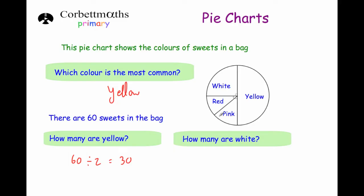The next question says how many sweets are white? Well white is a quarter of the pie chart, so that means that a quarter of the sweets are white. So we just need to do 60 divided by 4. If we halve 60 to get 30 and halve it again we'll get the answer which is 15.